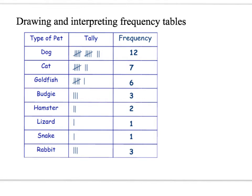You need to know how to draw a frequency table. This is used when you have categoric data — for example, type of pet. These are all separate things, not linked in any way. You're simply counting up the number of that thing in the population, so the number of people who had dogs is twelve, the number who had cats is seven, et cetera.